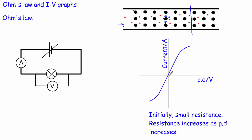So the bulb starts with a small resistance, which you could work out from the gradient of the initial straight portion, but then the resistance increases as the potential difference increases. The other side of the graph is exactly the same — it's just the current flowing in the opposite direction. So that's a light bulb.